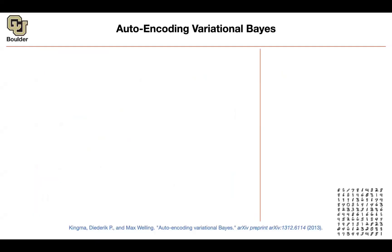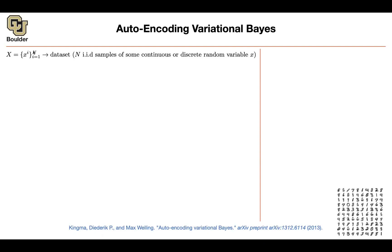So X is a data set which has some distribution by nature. You have a data set — this data set is being sampled from some real distribution that only nature knows. We don't know about it; we just see samples. We are seeing N examples. Maybe your examples are the MNIST data set — they're digits. Now we are in the space of pixels. X is an image.